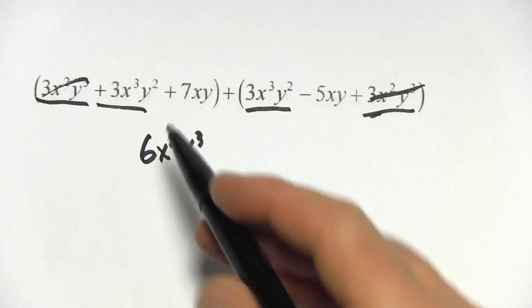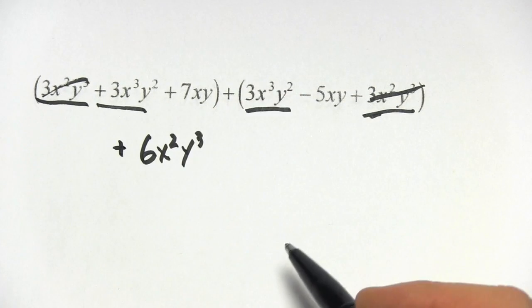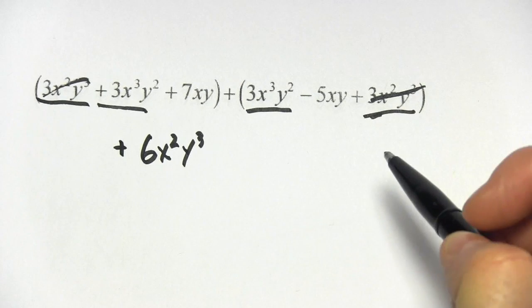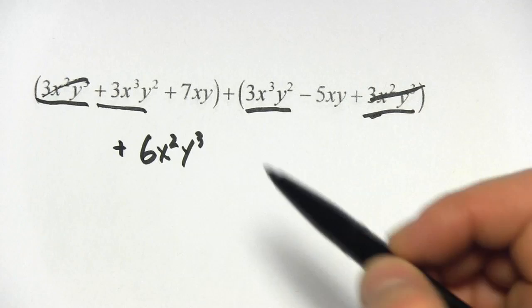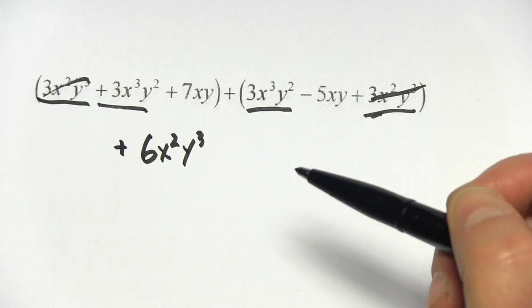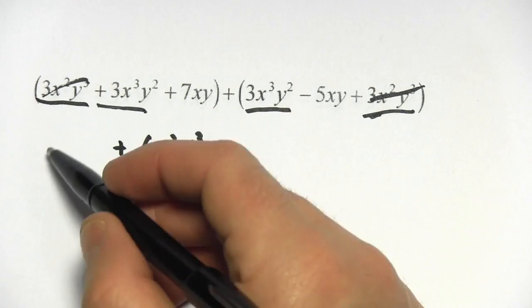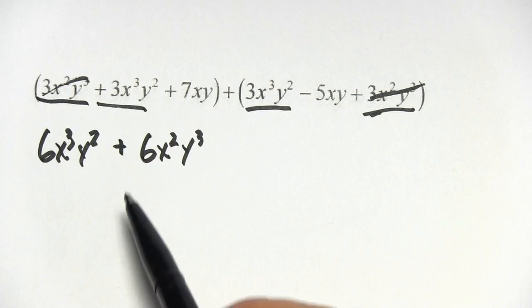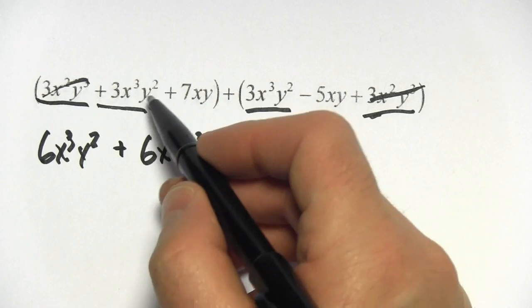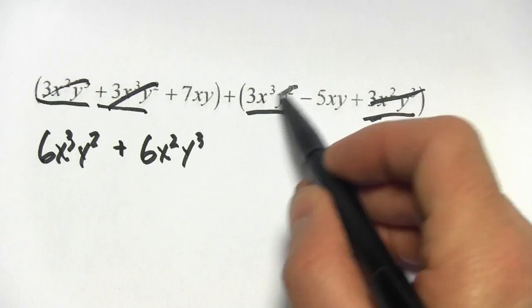And actually, I'm going to write this in front of this one. Because typically we use alphabetical order and then the highest powers usually go first. Technically, it doesn't matter. It means the same thing, but more often you'll see it written this way. So I'm going to put the 6x cubed y squared to the left here in front. So that part is done.